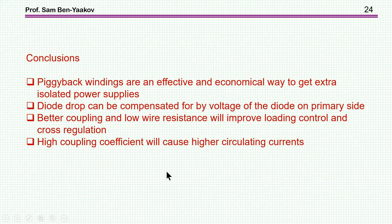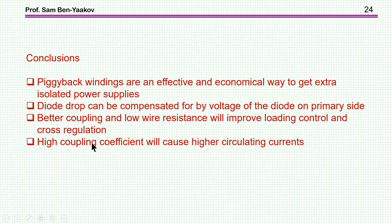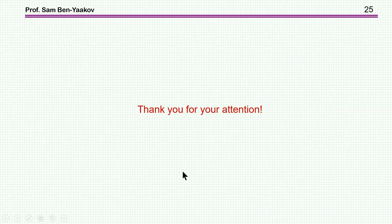Let me summarize this short presentation. The piggyback windings are an effective and economical way to get an extra isolated power supply. The diode drop on the secondary can be compensated by a diode voltage on the primary side. Better coupling and low wire resistance will improve loading control and cross-regulation. But a high coupling coefficient will cause higher circulating currents — these are the spikes I mentioned. This brings me to the end of the presentation. Thank you very much for your attention. I hope you found it of interest.